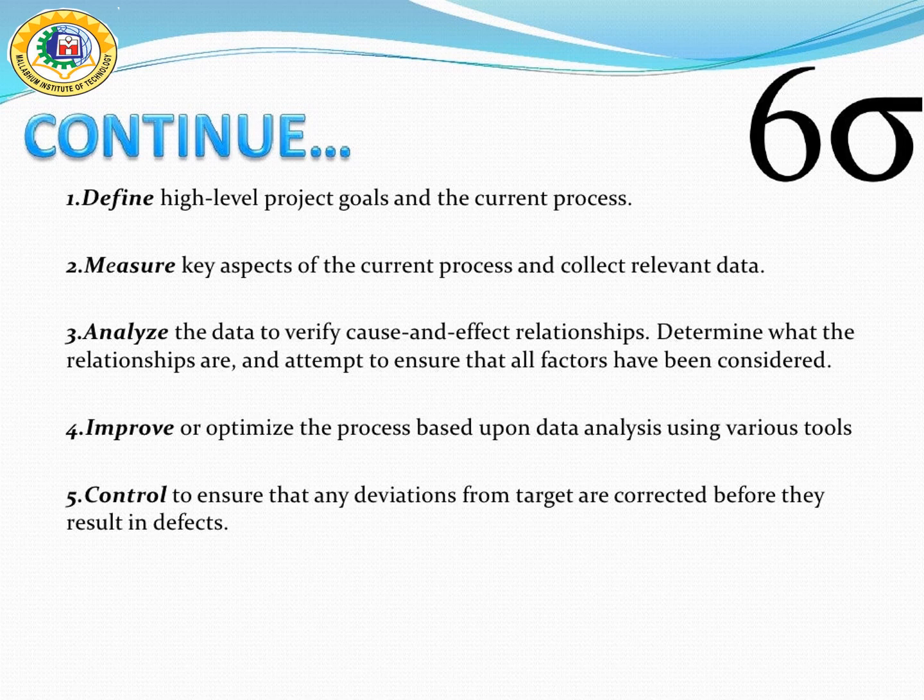Improve: The improve phase focuses on finding a permanent solution to the problem. The team then tests a proposed solution in a pilot program to test if the solution is effective and financially viable. Control: Once the solution has been implemented, the project controls it for several months, and if it meets performance expectations, turns it over to the process owner.